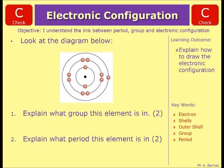OK, let's have a look. So the first one then, explain what group the element is in. Now if you remember, group is all down to the number in the outer shell. So the first mark is for saying it's in group 1 and the second mark is for the explanation of why it has one electron in the outer shell.